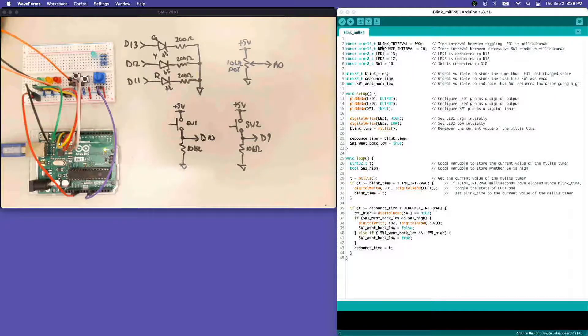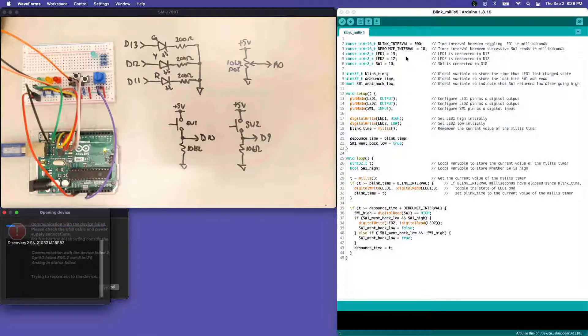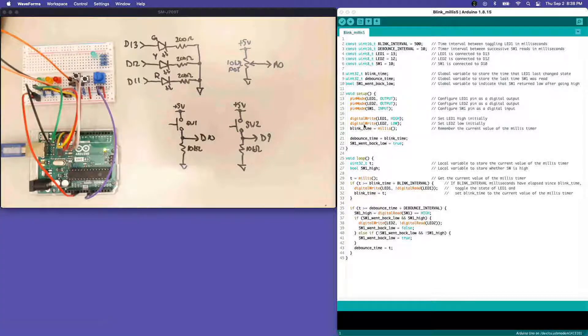This is called debouncing in firmware and blink millies five implements a simple firmware debouncing. Here we've got our blink interval, but we've also got a debounce interval. In addition to the blink time global variable, we have a debounce time global variable. We're going to basically use that same mechanism that we've been using to blink the LED at a certain interval to only sample the tactile switch at this 10 millisecond interval in this case. 10 milliseconds is sampling 100 times a second and that's plenty fast for a human user interface device like a tactile switch.